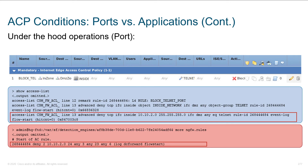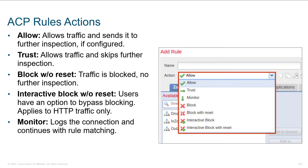The rule actions available are: allow, which sends traffic to the device but allows further inspection; trust, which skips further inspection entirely; block, which does a silent drop without sending a TCP reset; interactive block, where users have an option to bypass the block — this applies to HTTP traffic only, giving users a warning that they're not supposed to be doing this but letting them continue if they choose; and monitor, which just generates a notification that the event occurred.